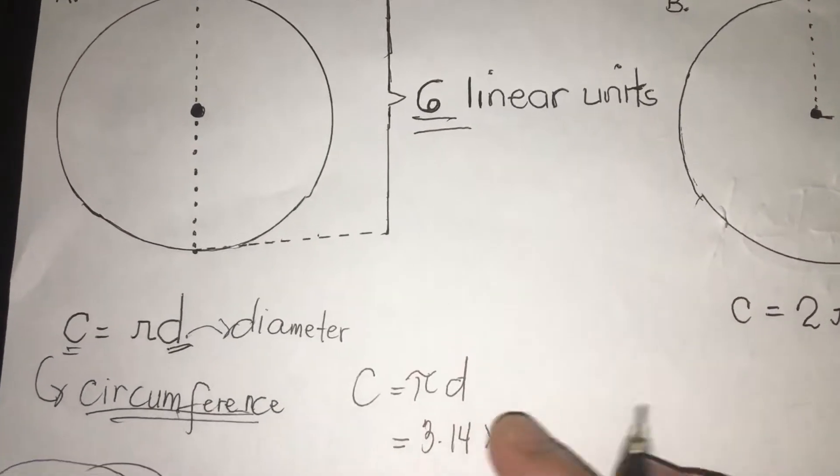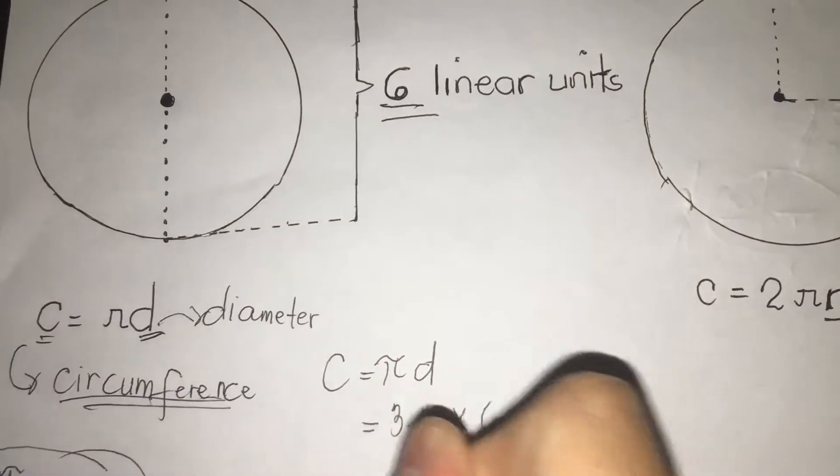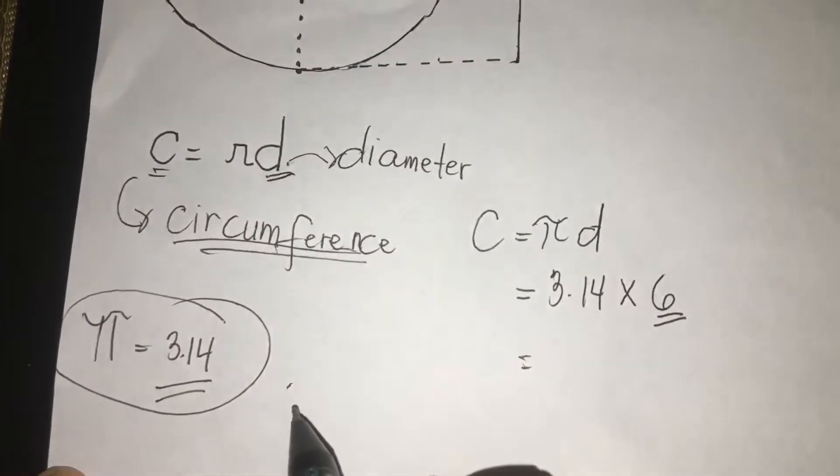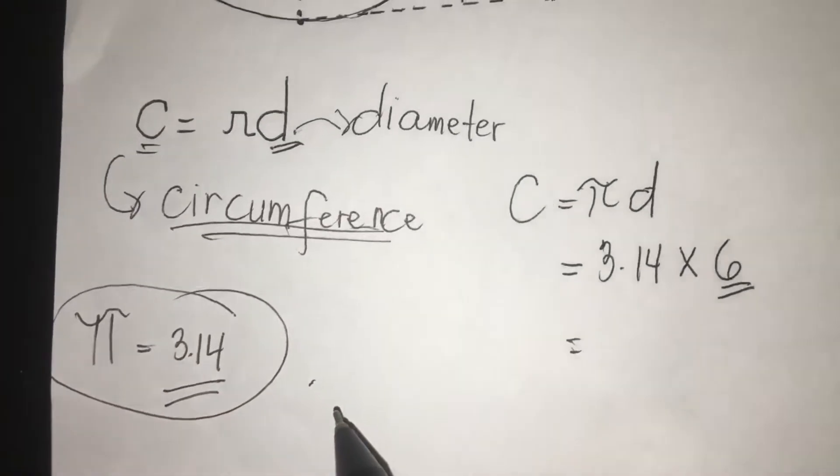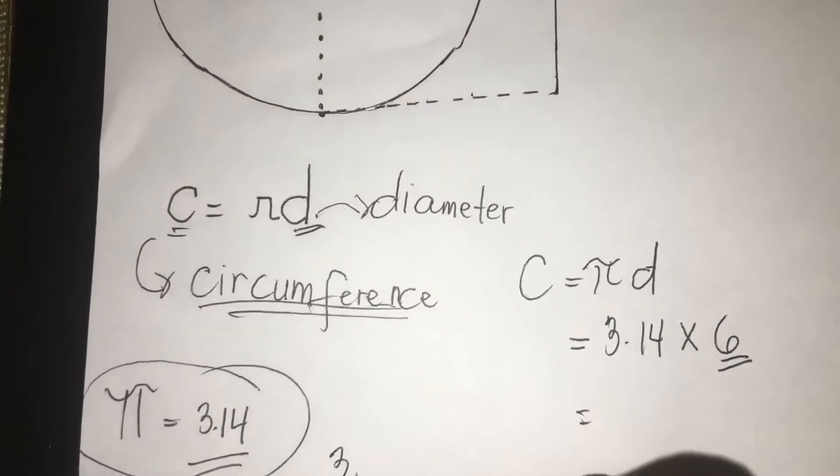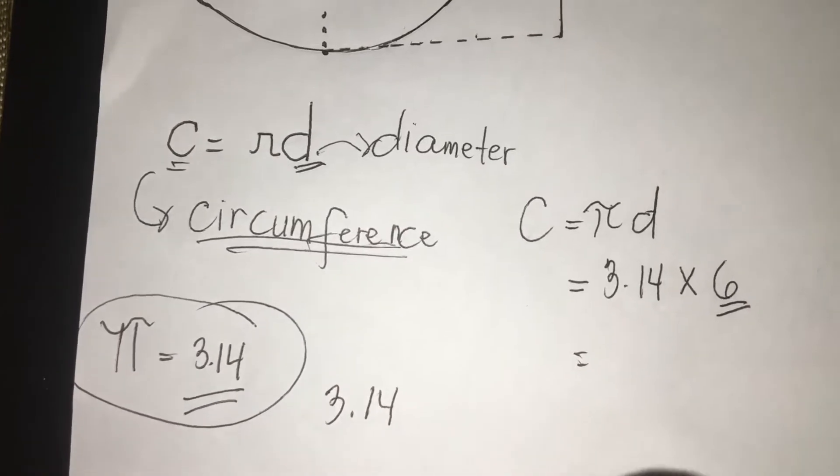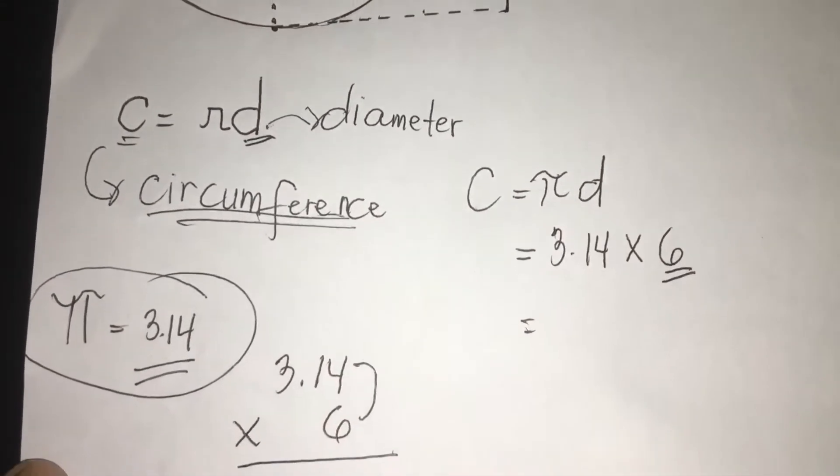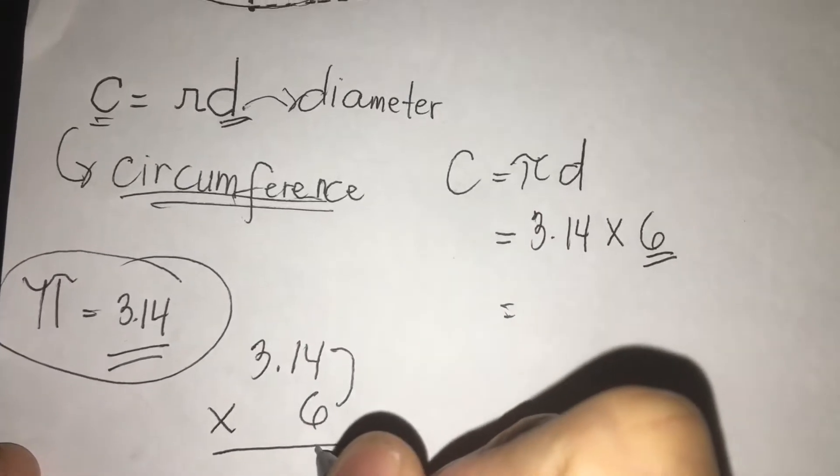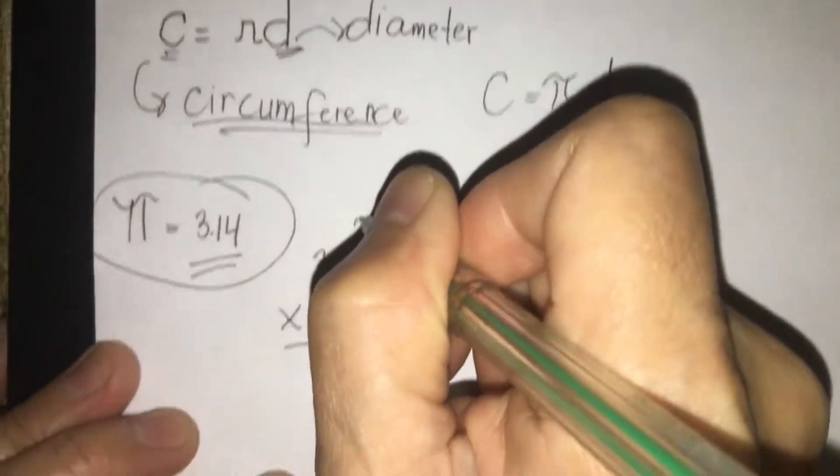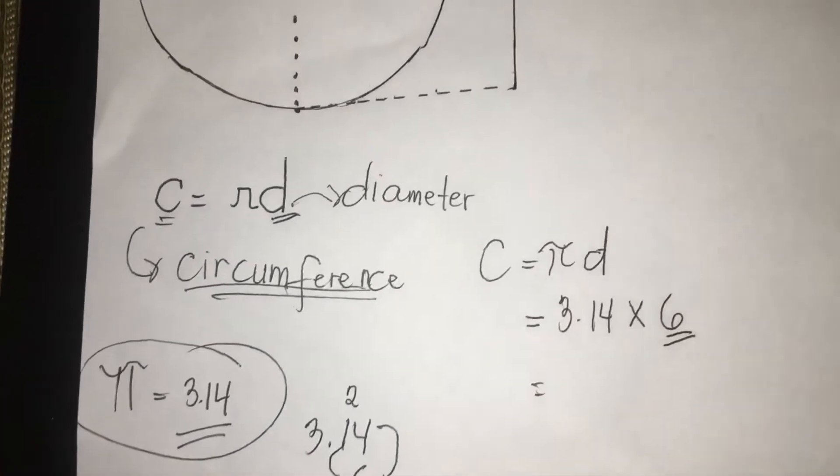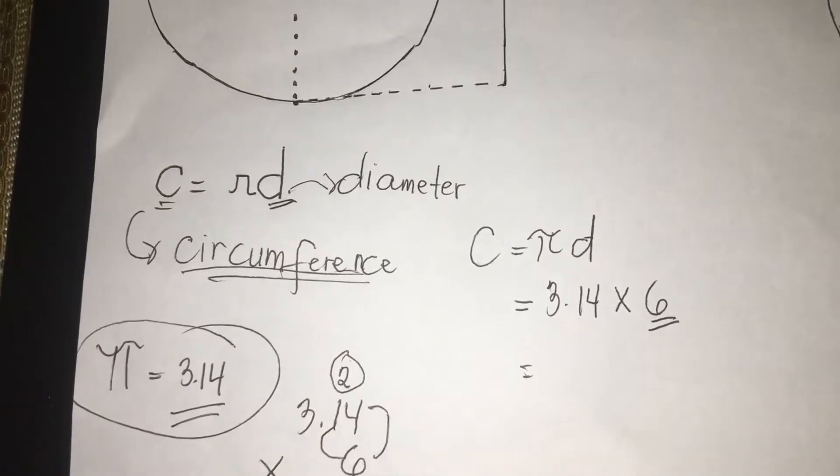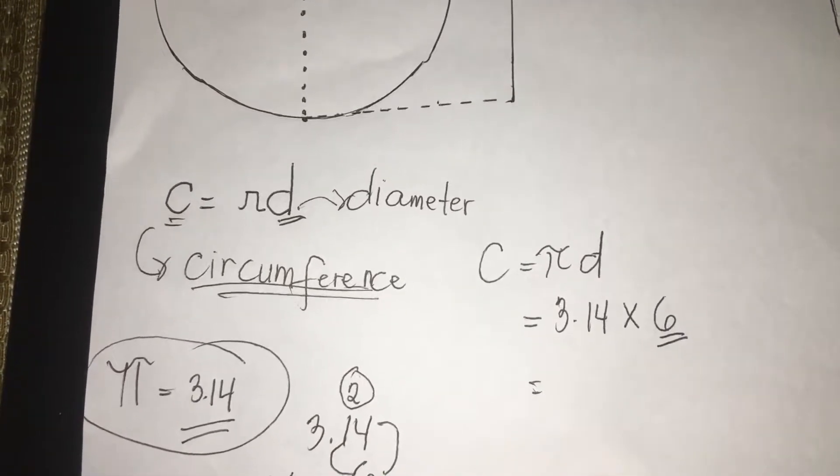Now we are going to multiply 3.14 times 6. I will show you how to multiply. 3.14 times 6. 4 times 6 is 24. We're bringing down 4 here. Regroup 2. 1 times 6, the answer is 6, plus the regroup 2, the answer is 8. Bring down 8.